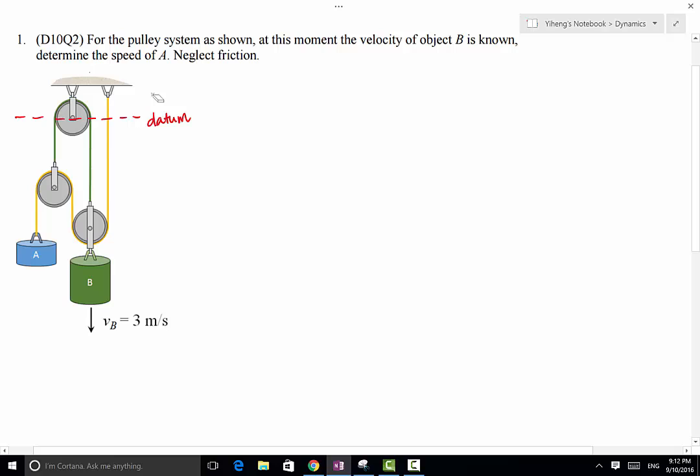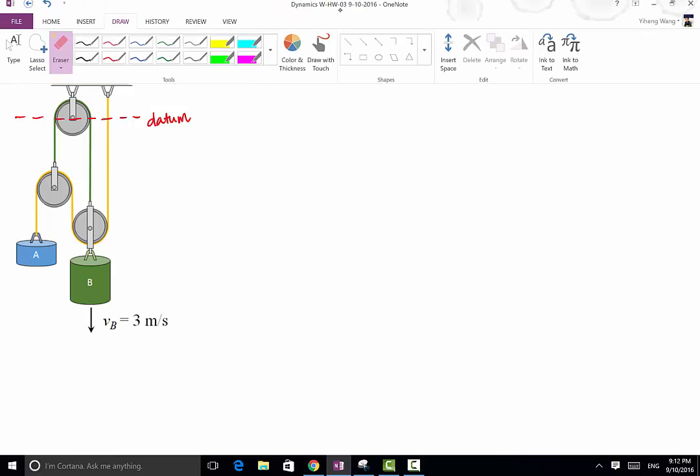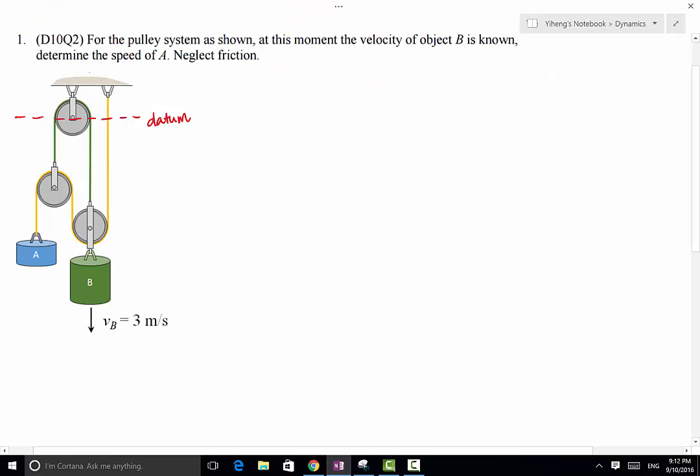The next thing to do is to draw position vectors that represent the positions of the objects of interest, in this case objects A and B. Position vectors are always drawn from a fixed point. Do not draw the position vector of A from here because this location is not fixed. Always draw your position vector from a fixed position, in this case our datum. That's the reason why we even had a datum to begin with.